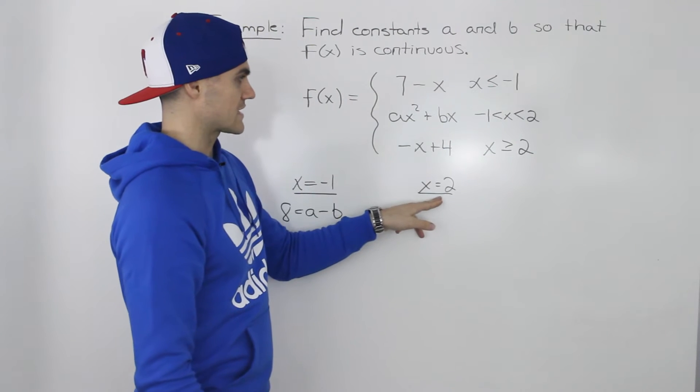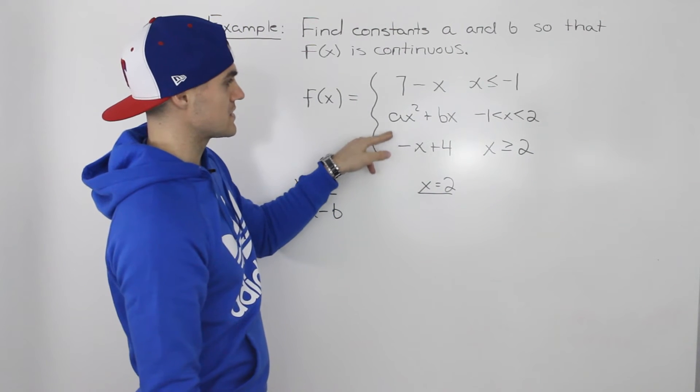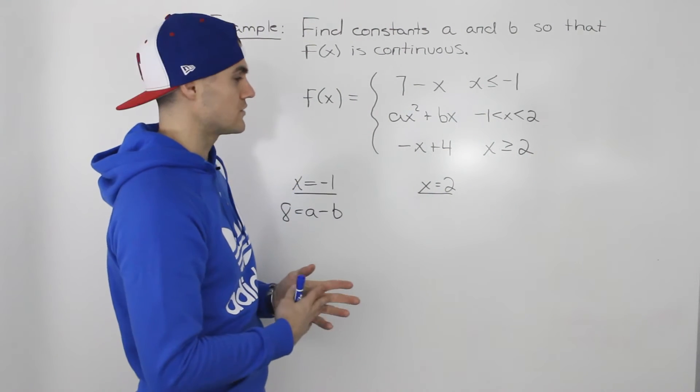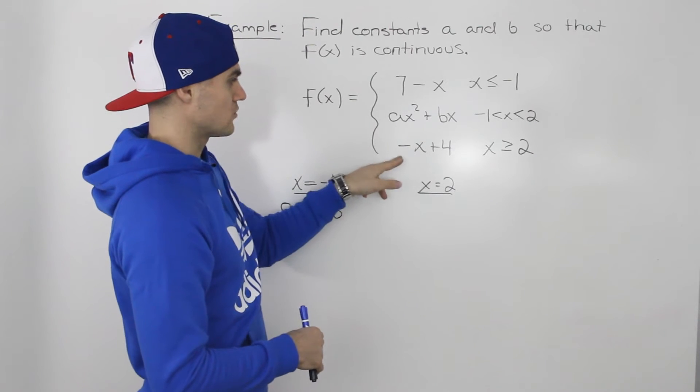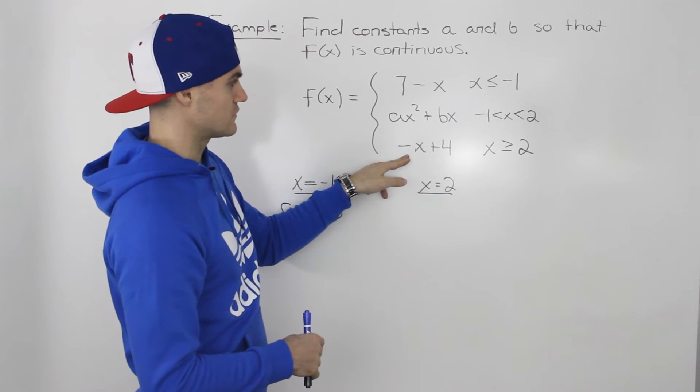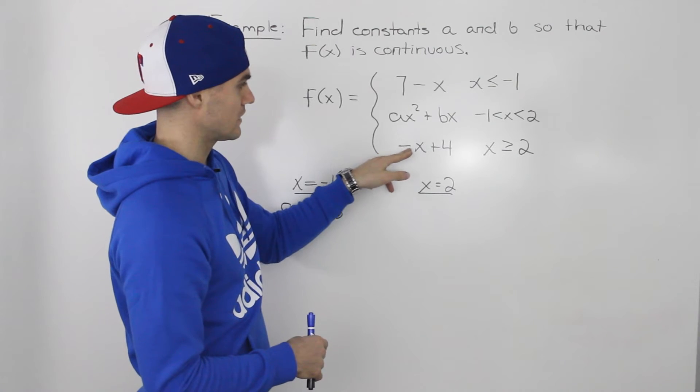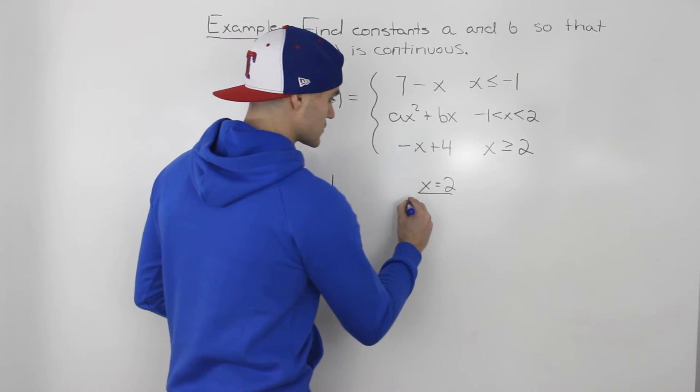Similarly, at this x value of 2, these two pieces have to equal. The y values have to equal. So the y value of this piece at x equals 2, if we plug in 2 for x, we'd have negative 2 plus 4, which is positive 2.